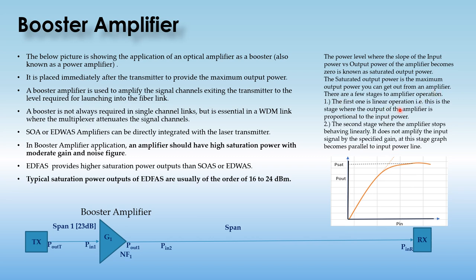The first stage is the linear operation, where the output of the amplifier is proportional to the input power. The second stage is where the amplifier stops behaving linearly — it does not amplify the input signal by the specified gain. At this stage the graph becomes parallel to the input power line; this is the saturation state.